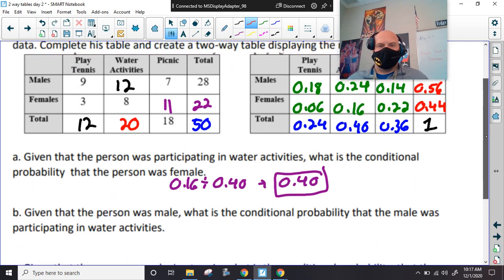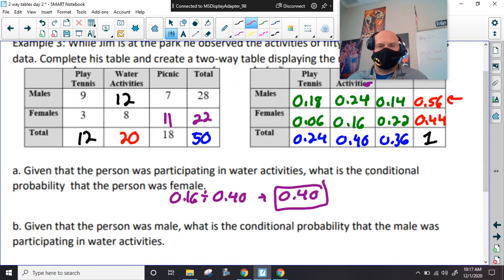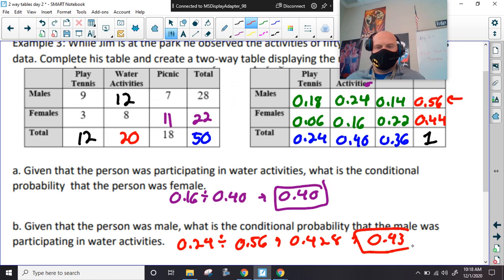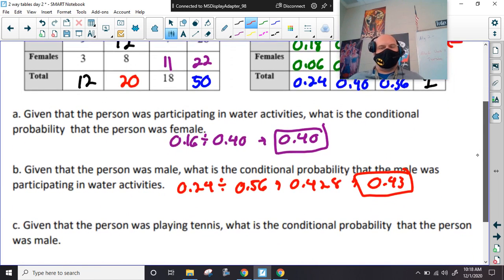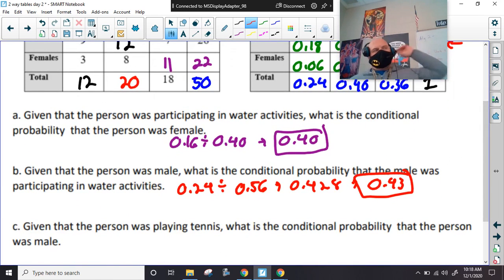Given that person was male, so that's this column right here. So, we're going to be divided by 0.56. And, they did water activities. So, 0.24 divided by that. This is 0.428, which is 0.43. And, again, I've got to double-check to see if these are percentages or not. I would honestly be totally fine with doing decimals. We should know how to do decimals and percentages.